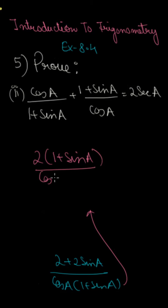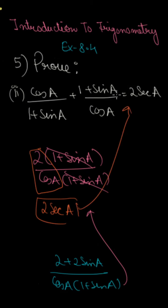And below, cosA(1 + sinA). So what happens? 2 upon cosA(1 + sinA). The terms cancel. So see, LHS is equal to RHS. We've proved it.